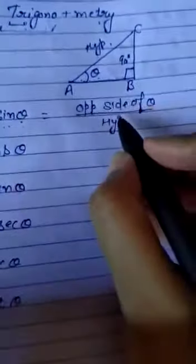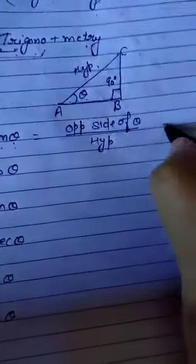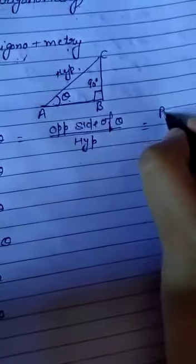The value of sin theta is opposite side of theta divided by the hypotenuse. As we know that this is a right angle triangle and the opposite side of the right angle is the hypotenuse. This is my theta, so the opposite side of theta is BC and the hypotenuse value is AC. Therefore, sin theta equals BC upon AC.